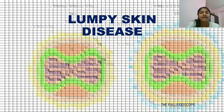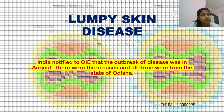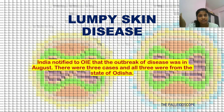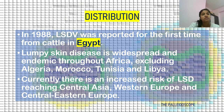Today's video is on lumpy skin disease, which is a very important disease. India notified to OIE that the outbreak of this disease was in August; there were three cases and all three cases were from Burlista. The distribution of the disease: in 1988, LSDV, that is lumpy skin disease virus, was reported for the first time from Catalina.